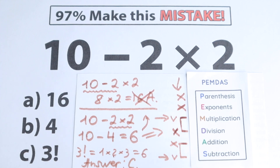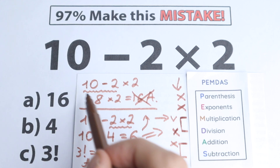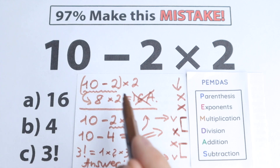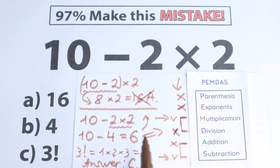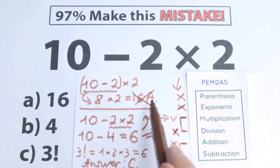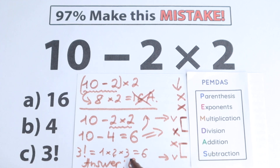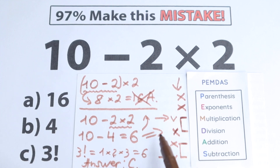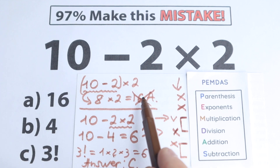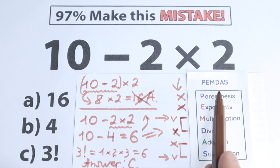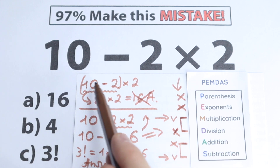One important note: if we put parentheses around 10 minus 2, then we would need to start from those parentheses first, and the correct answer would be 16. But in our case we don't have parentheses, so the correct answer is option C which is 6. With parentheses, the answer would be 16 because parentheses are the first step.